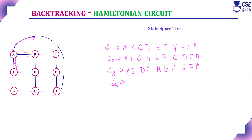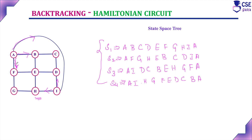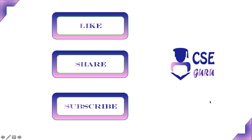Considering another solution through I — instead of going through that route, checking with H — the fourth solution is: A to I, I to H, H to G, G to F, F to E, E to D, D to C, C to B, and back. These are all four possible Hamiltonian circuits for this given graph by constructing the state space tree. The paths through F and I can be constructed by yourself for practice, as the procedure is the same. Thank you for watching this video.